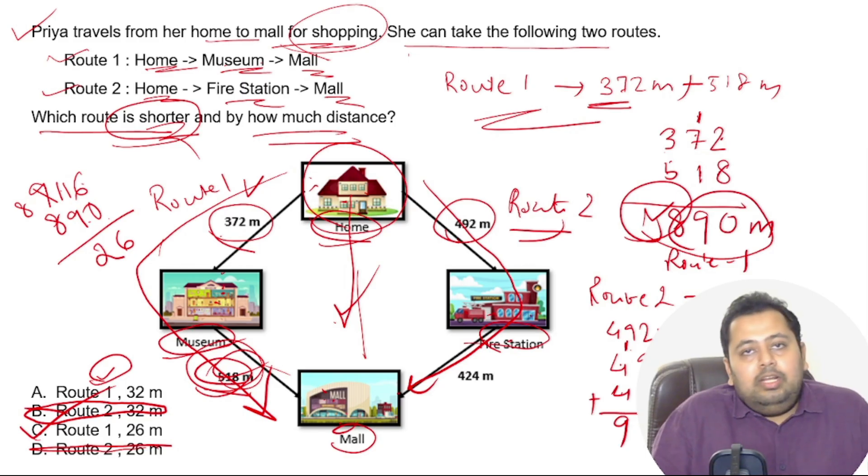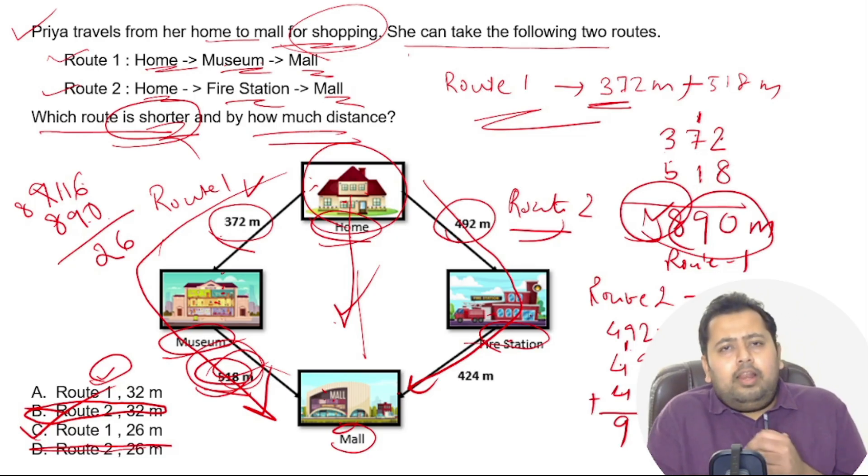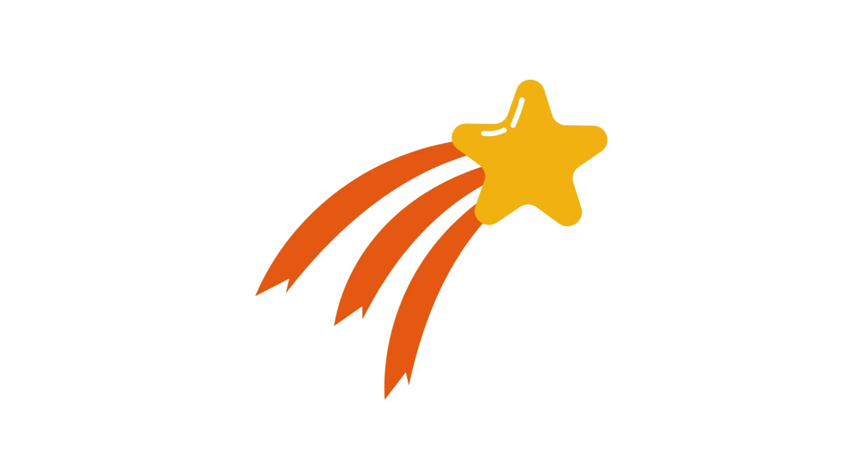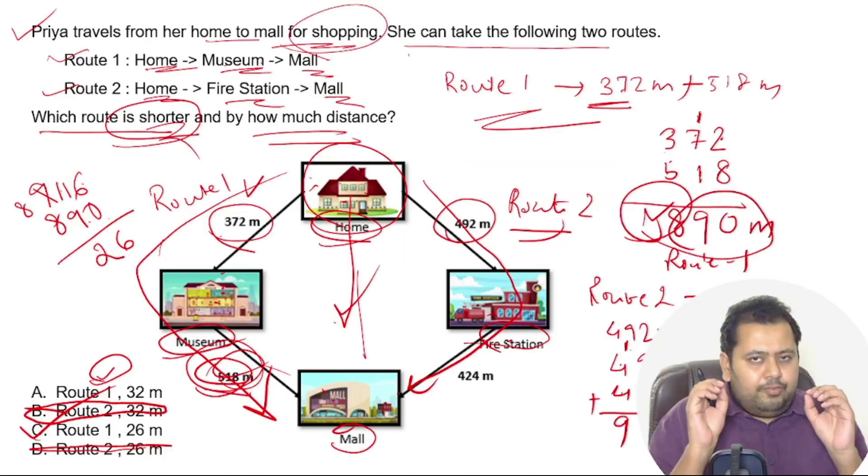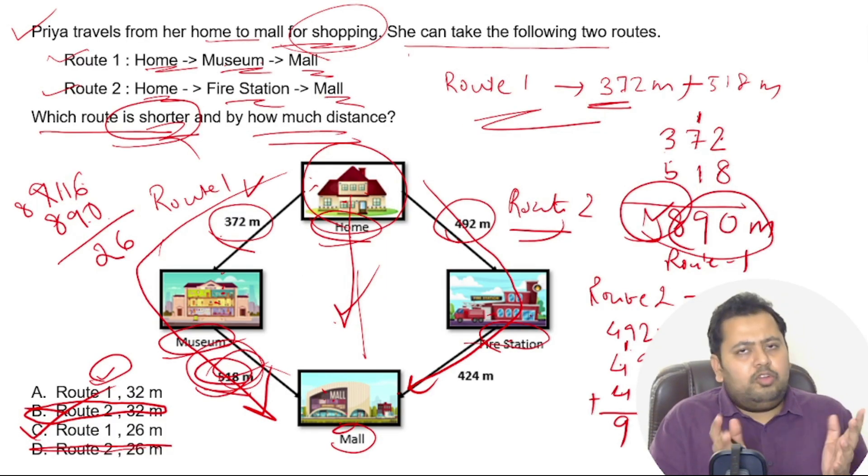So route 1 is the shortest and it is shorter by 26 meters. I hope you would have already found the solution correctly. If you have, give yourself a clap, give yourself a star. And if you couldn't, not to worry. I hope you would have learned something new today and that itself is a great thing. Clap for yourself for that as well.